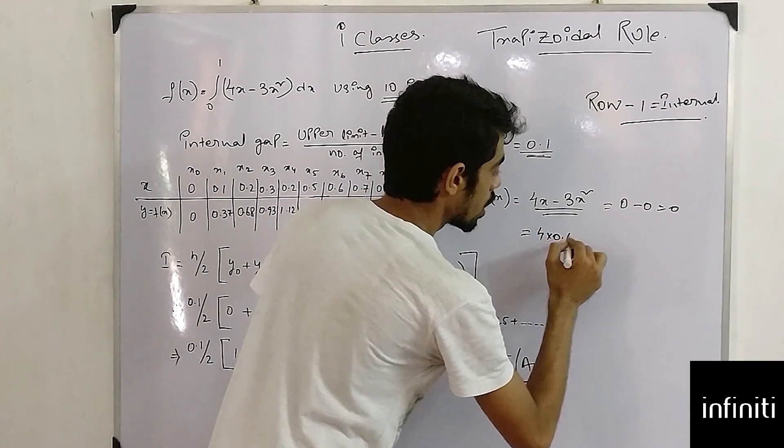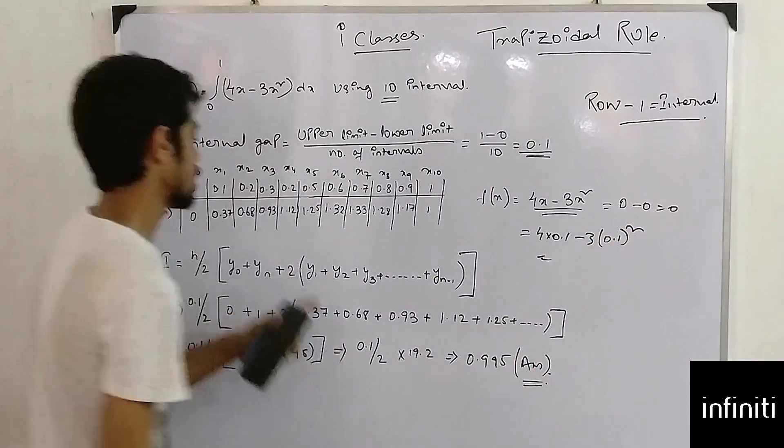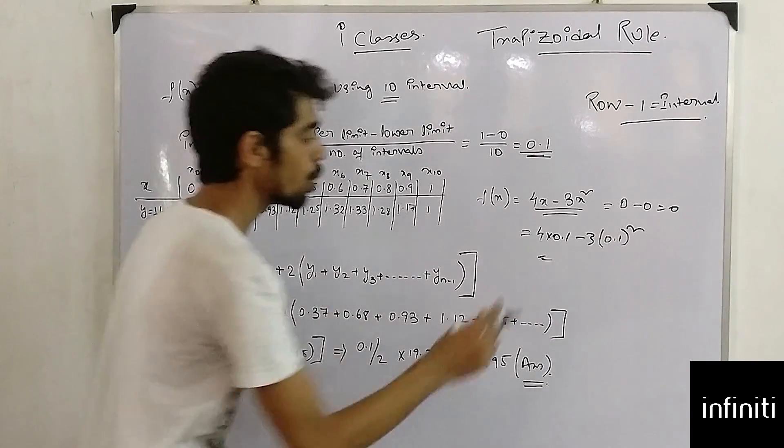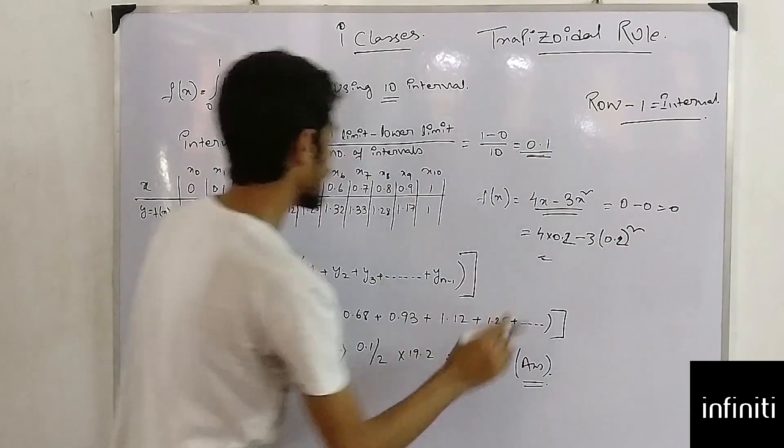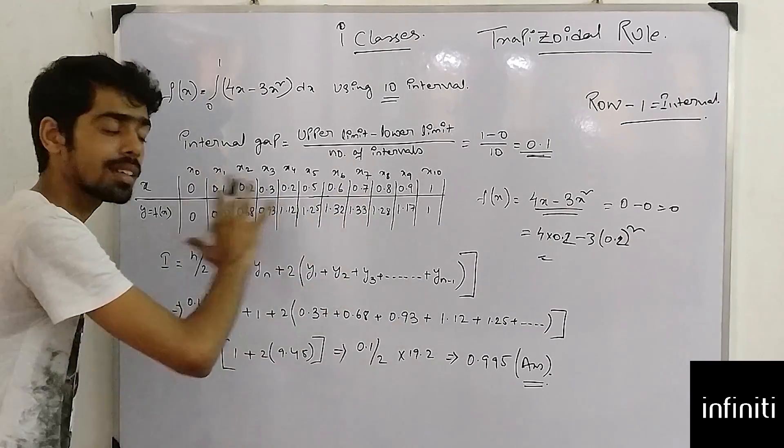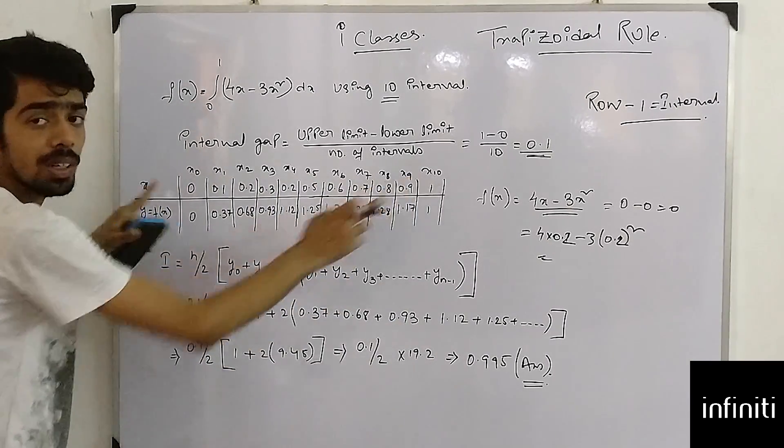Again putting x equals to 0.1: 4(0.1) minus 3 into 0.1 whole square, I will get 0.37. Again putting 0.2 in this I will get 0.68, and same I will construct this table till from the lower limit to the upper limit. Remember this: from the lower limit to the upper limit, incrementing just the internal gap.